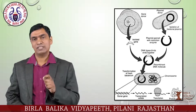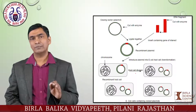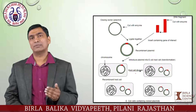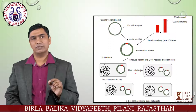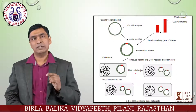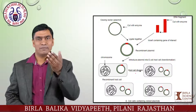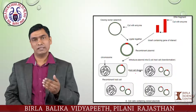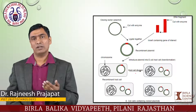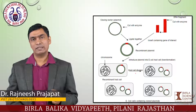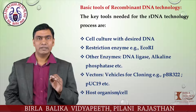Cloning basically generates the same type of copy of the gene of interest, and by this we can also check the expression of genes in the form of protein. The diagram given in the CBSE book regarding the basic steps of rDNA technology shows the red portion indicating the gene of interest and the green one indicating the vector. Using the same restriction enzyme, we produce the recombinant vector, and in the next step we generate multiple copies of our gene of interest.